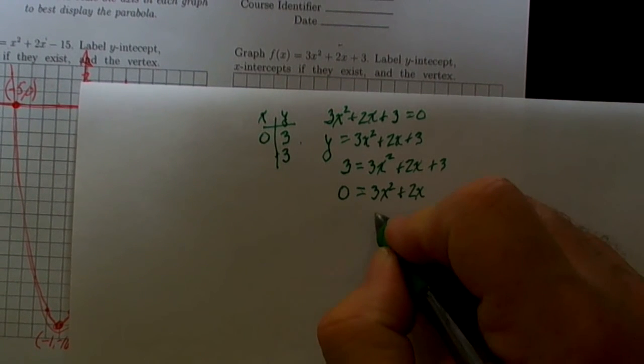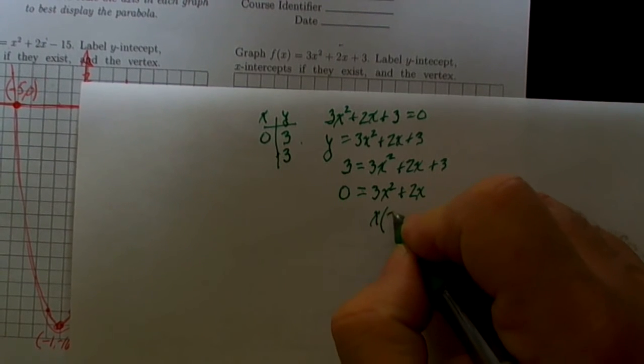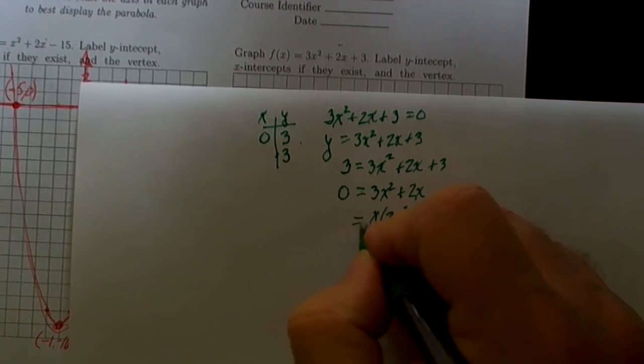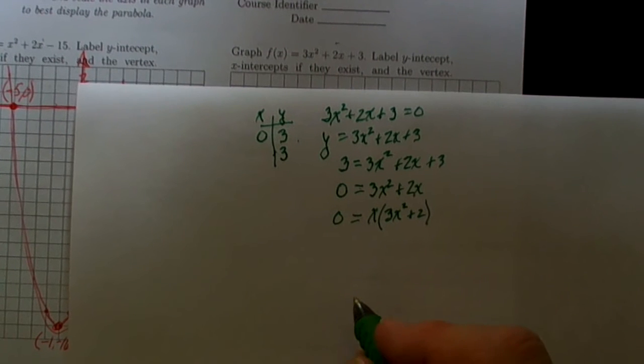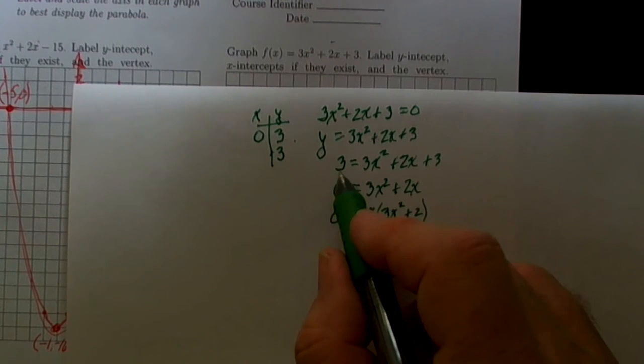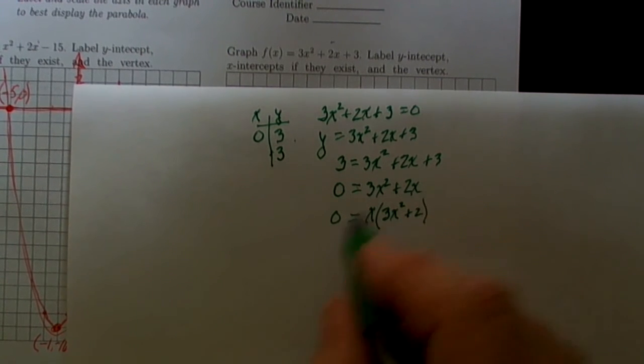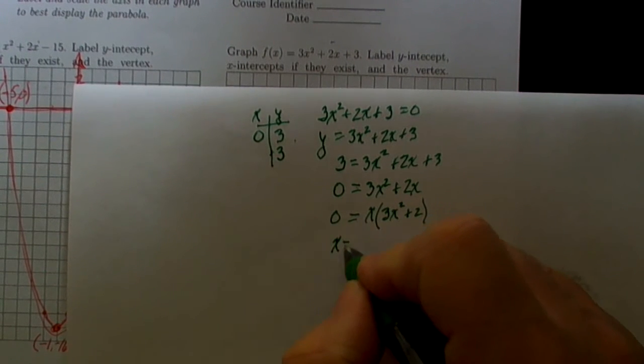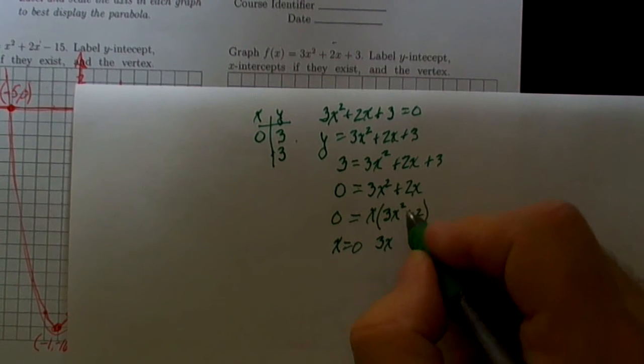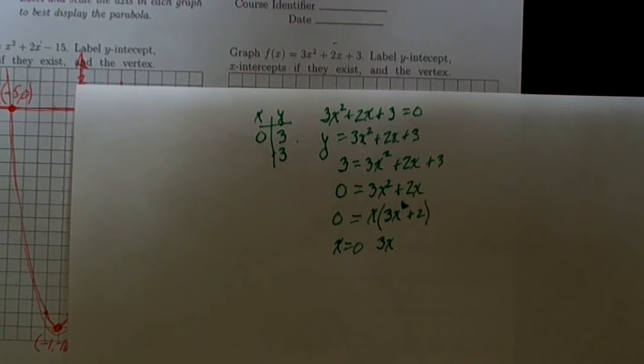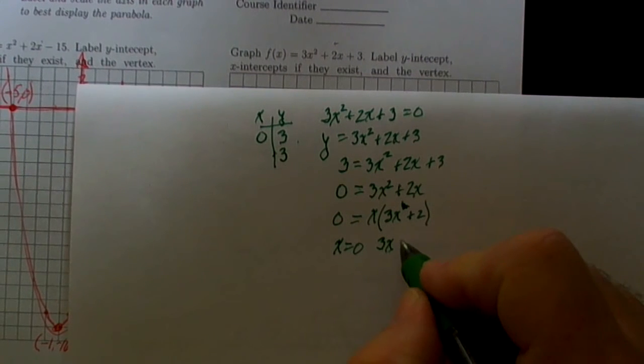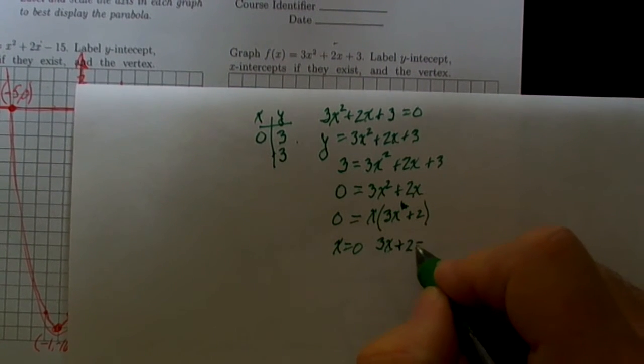This always factors to allow us to factor out an x and then we're left with 3x plus 2 is equal to 0. One of them of course is when x is equal to 0. The other one is when 3x plus 2 is equal to 0. I'm sorry, I factored out an x and left me with an x and a 3x plus 2.